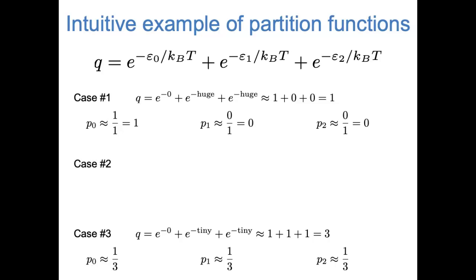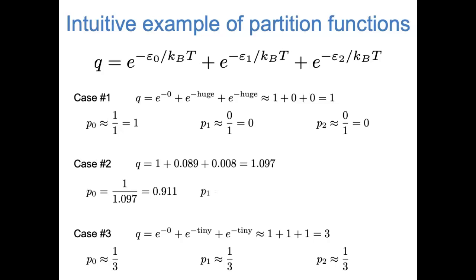Case two is the intermediate case. Again, the first term of the partition function equals one. But for the second and third terms we need to plug in the actual excited state energies and temperature. The first term is one, and the second and third terms get smaller as energy gets higher. The partition function comes out to around 1.1. The probability that the ground state is occupied is one divided by 1.1, which is about 91% — the ground state is most likely occupied. The probabilities decrease from there: about 8% for the first excited state and less than 1% for the second.